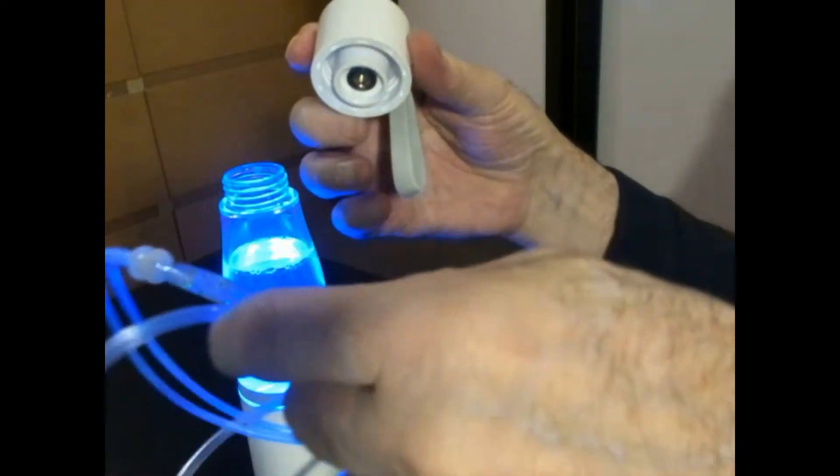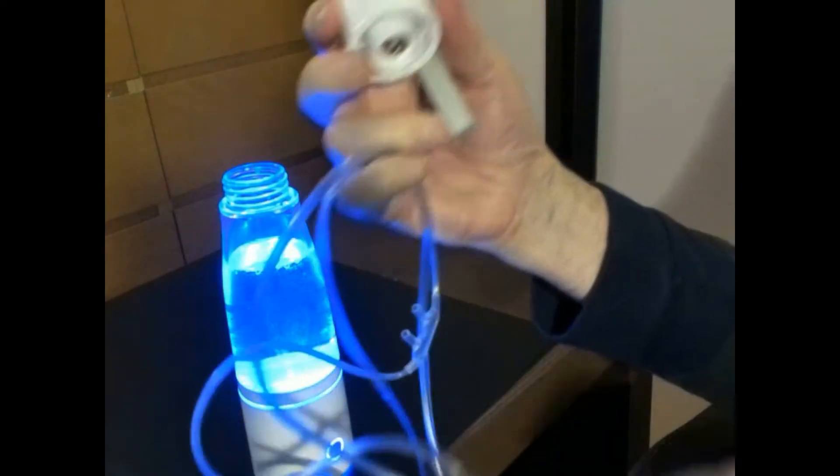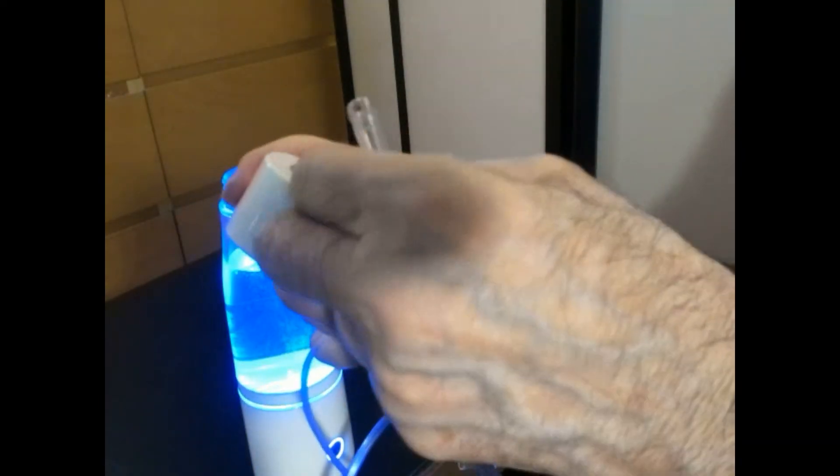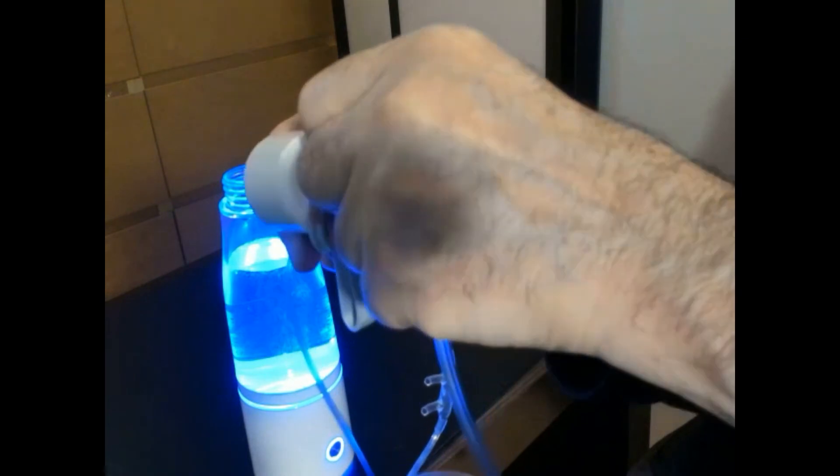For inhaling, take the tube and attach it to the lid like this. You don't have to remove the lid every time, just attach the tube to it.